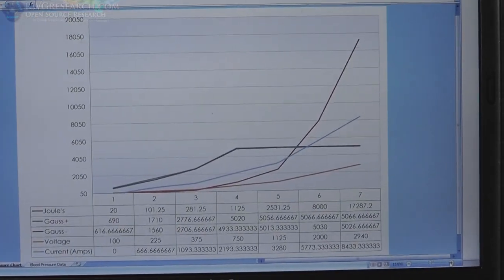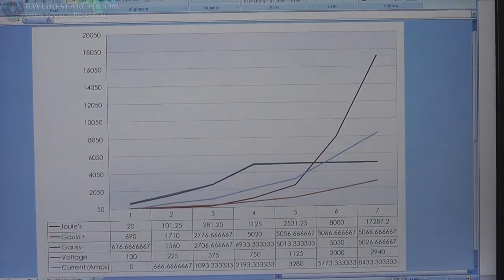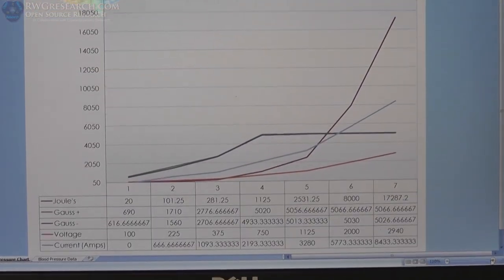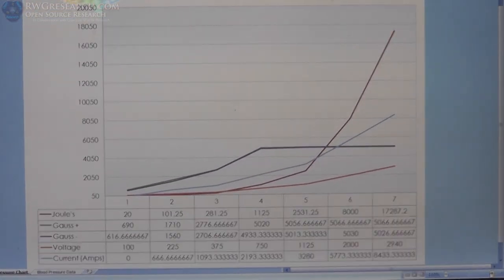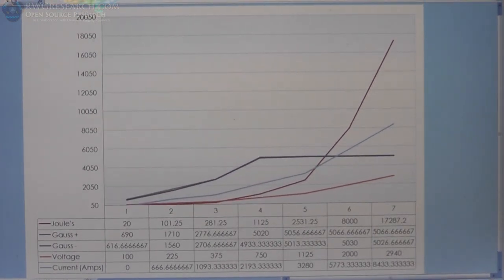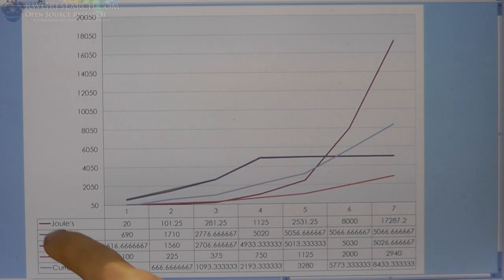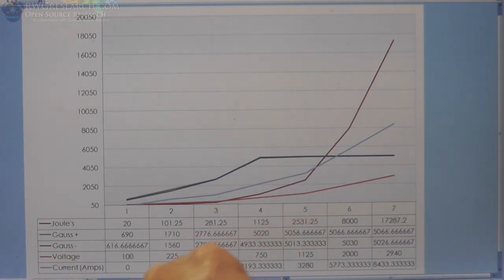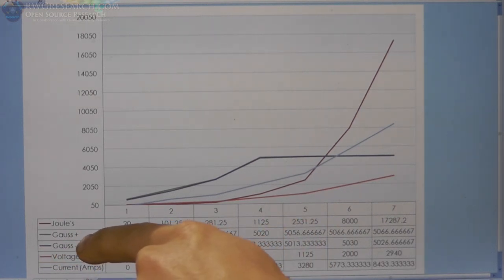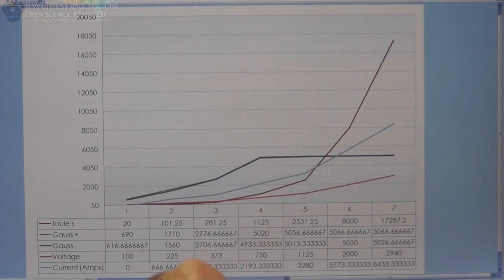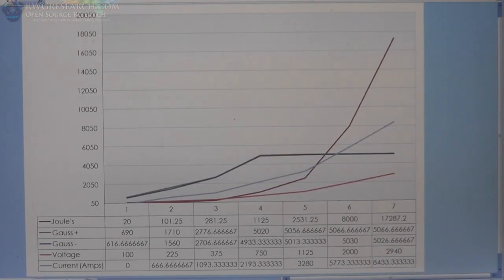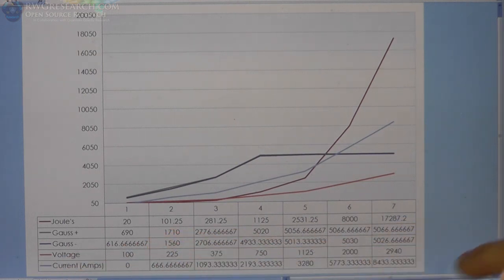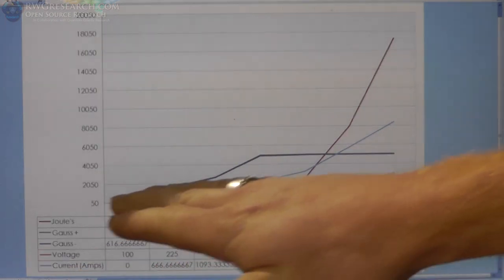Okay, so there's the data. I think that you can see this well enough. So we have our joules, the amount of energy, the Gauss positive, the Gauss negative. Positive is north, negative is south. And then voltage and our current. So these are our graphical charts.